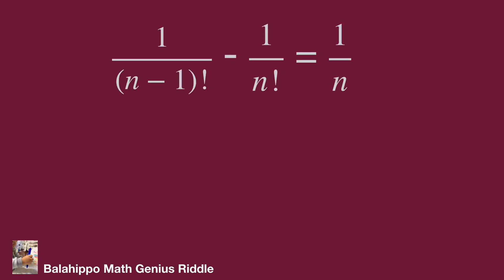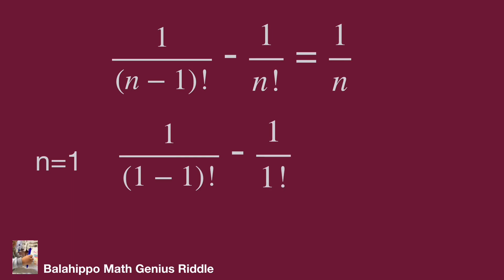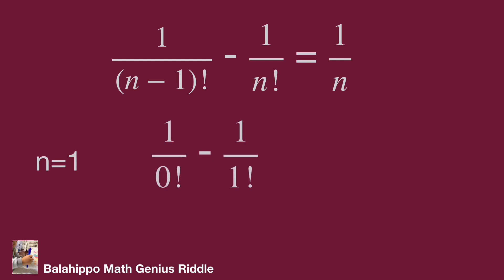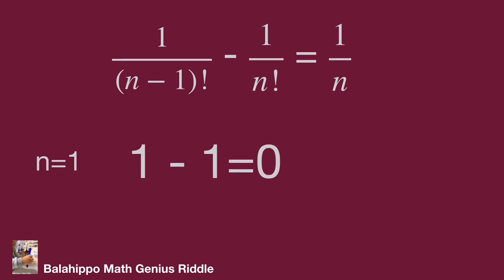Back to the given equation: 1 over (n minus 1) factorial minus 1 over n factorial equals 1 over n. We note that n cannot equal 0. When n equals 1, the left side equals 1 over 0 factorial minus 1 over 1 factorial, which equals 1 minus 1 equals 0. But the right side equals 1 over 1 equals 1. So n equals 1 is not the solution.